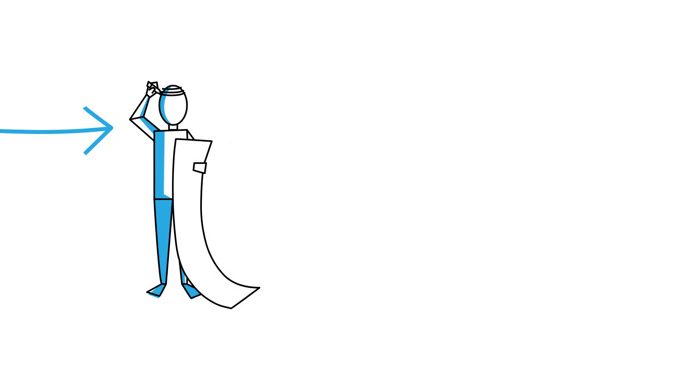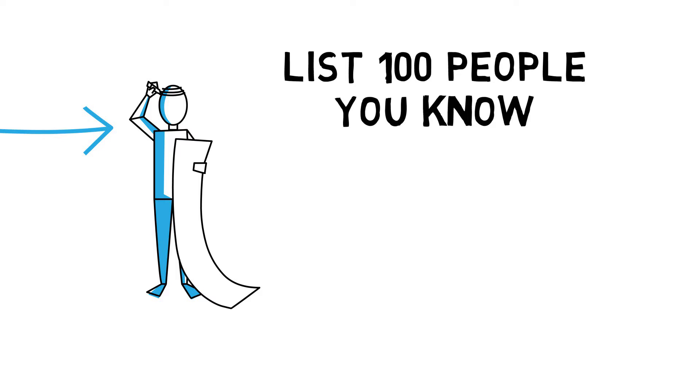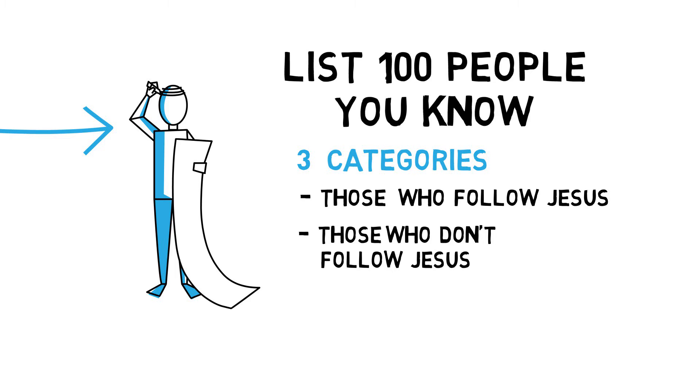Have them write a list of 100 people they already know. Have them break that list into three categories: those who follow Jesus, those who don't follow Jesus, and those they're not sure whether they follow or not.